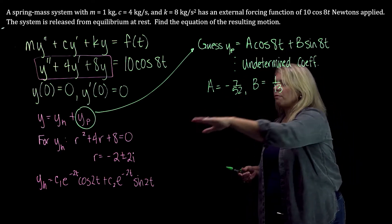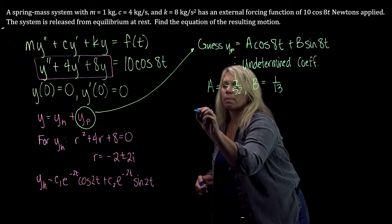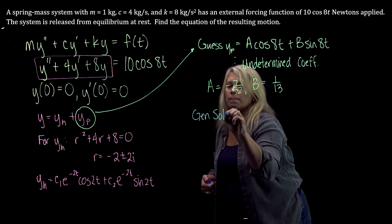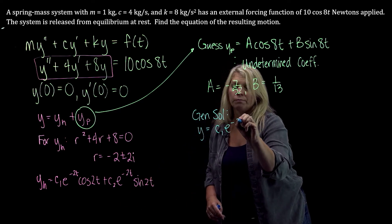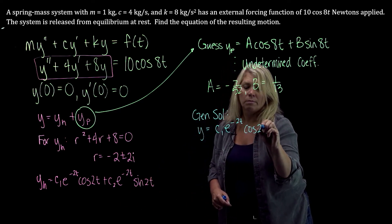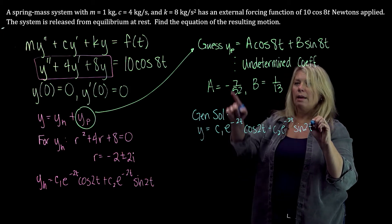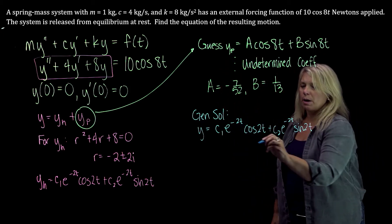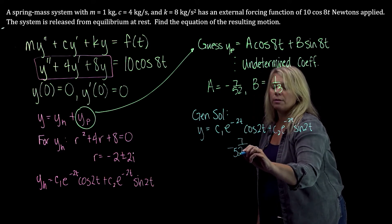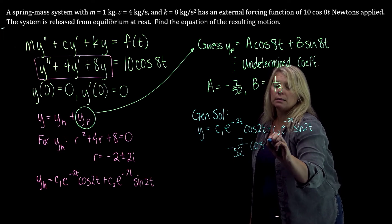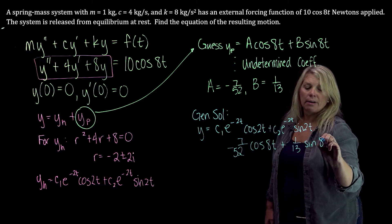So we can now write down our general solution for the differential equation. From our homogeneous solution and then we're going to add to that what we get from this part here. So I'm going to have to go on to another line because this is 7 over 52 cosine of 8t, this is a long one, plus 1 over 13 sine of 8t.